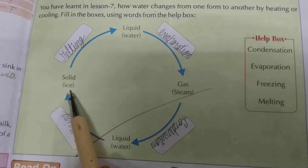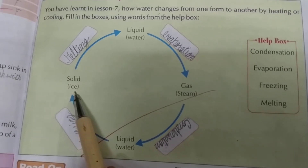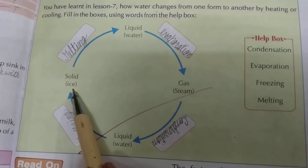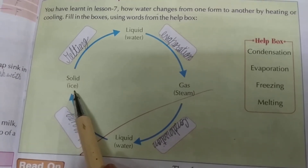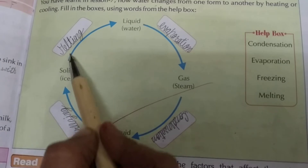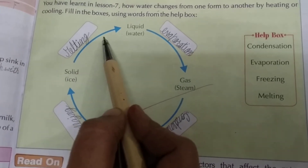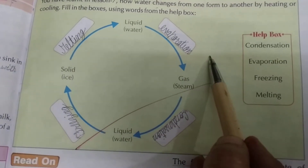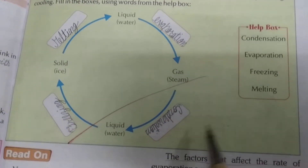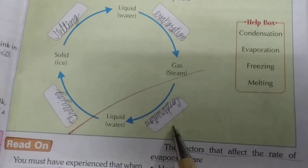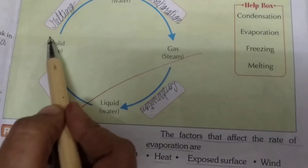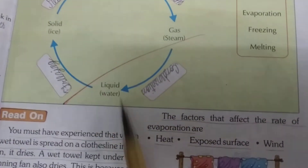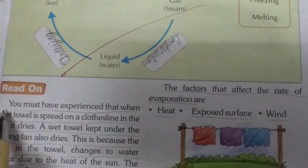When we keep ice on the table, after 5 or 10 minutes what we will see? It changes into water — that is melting. So the processes are: evaporation, condensation, freezing, and melting.